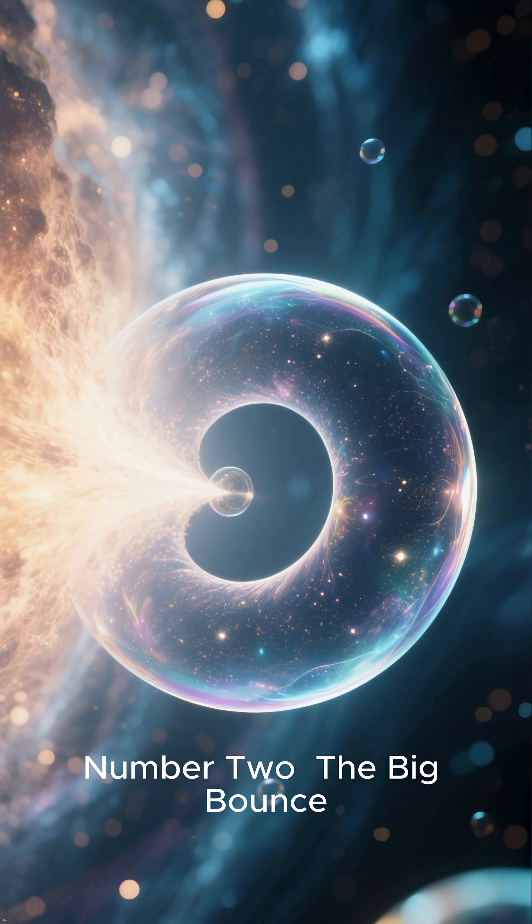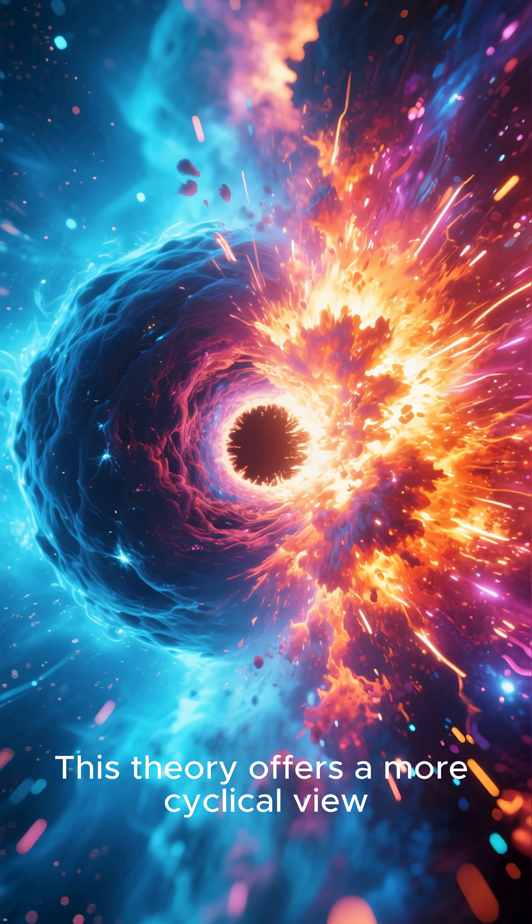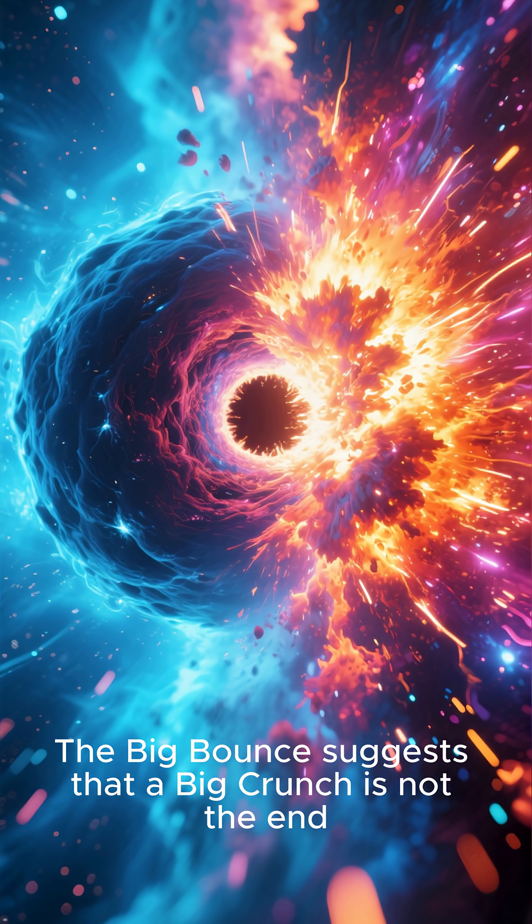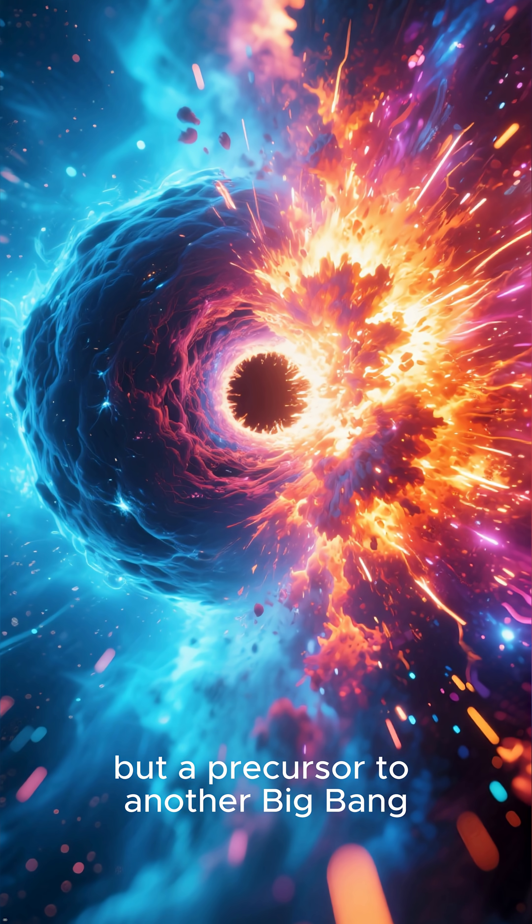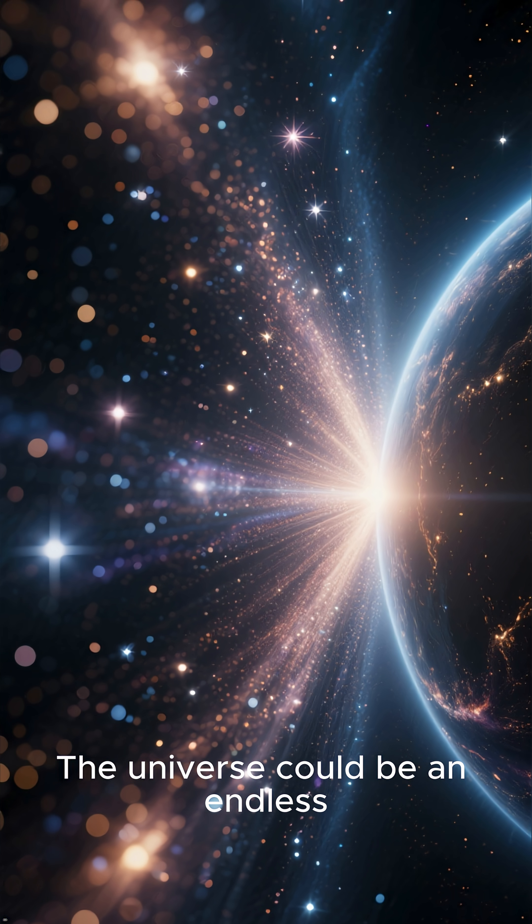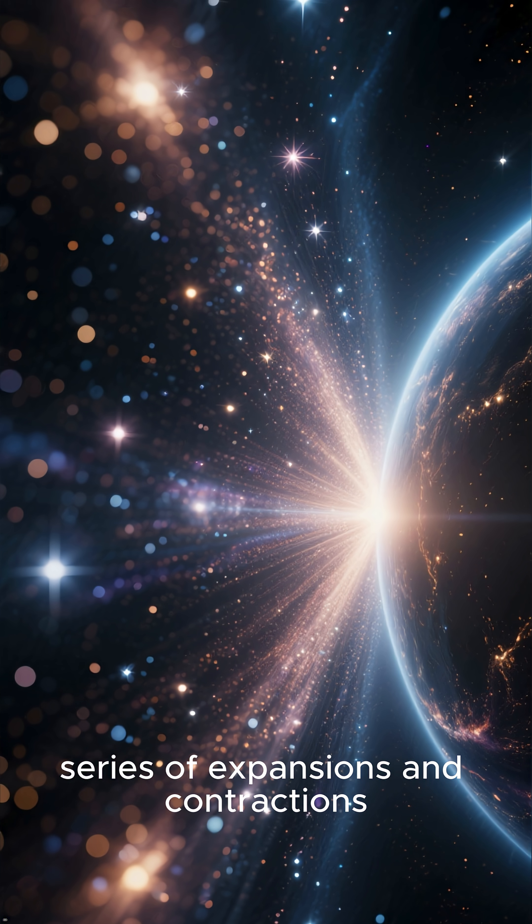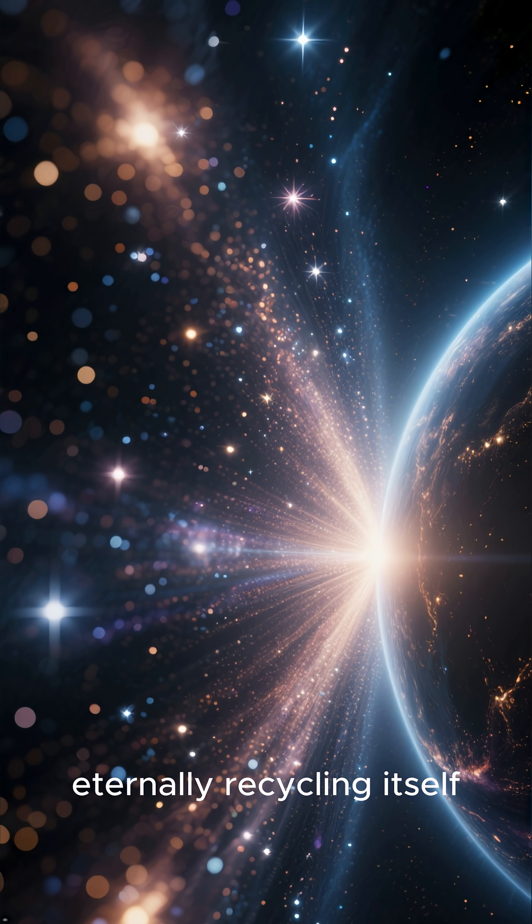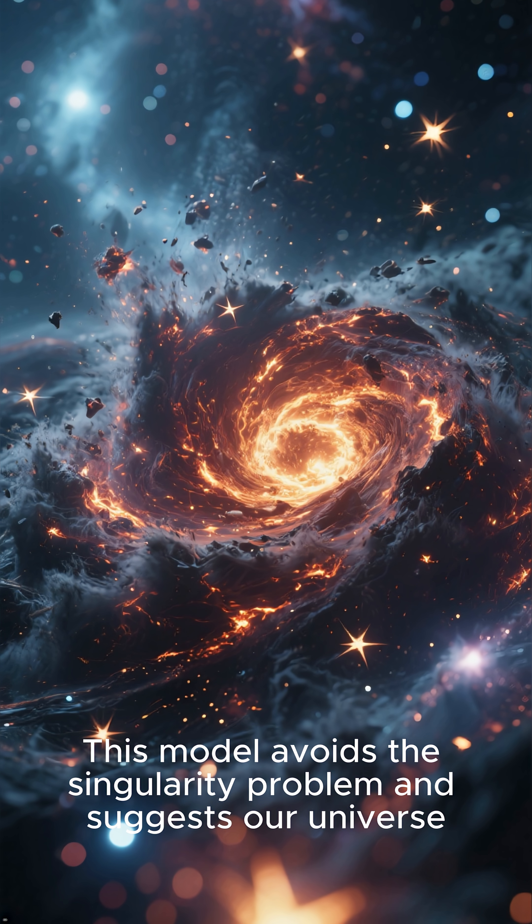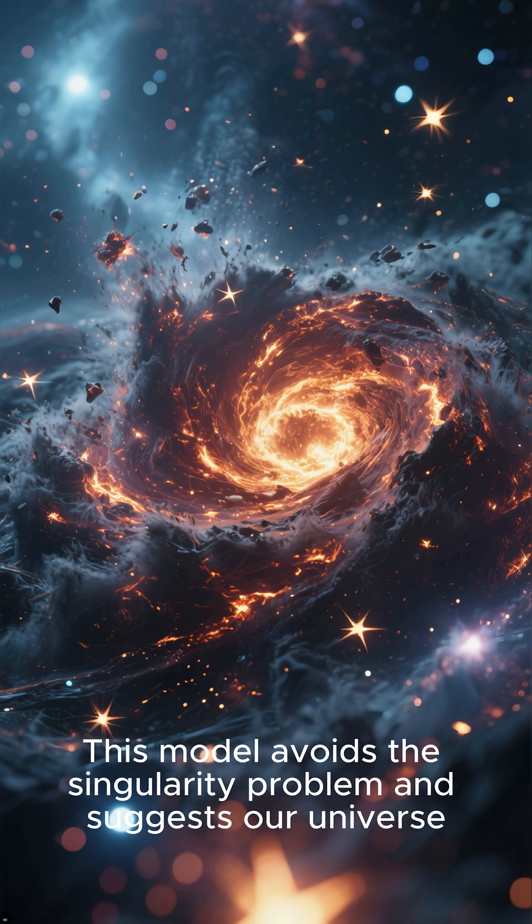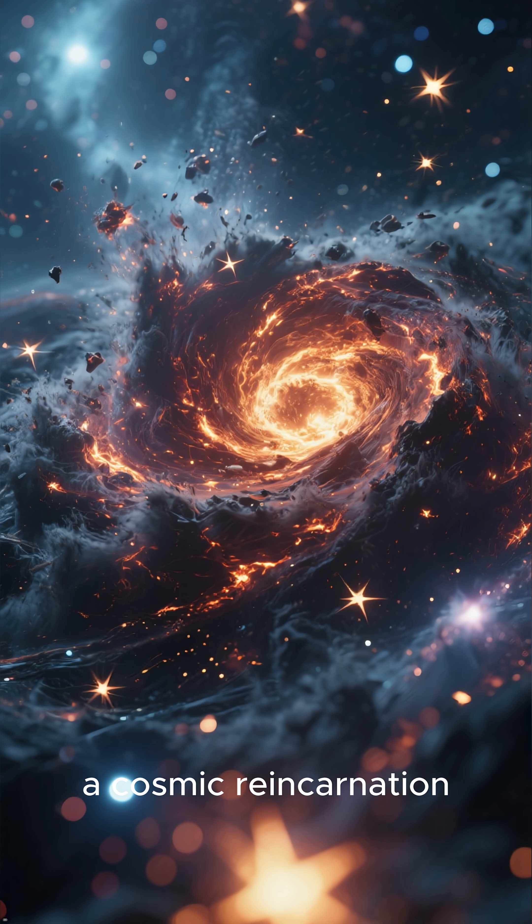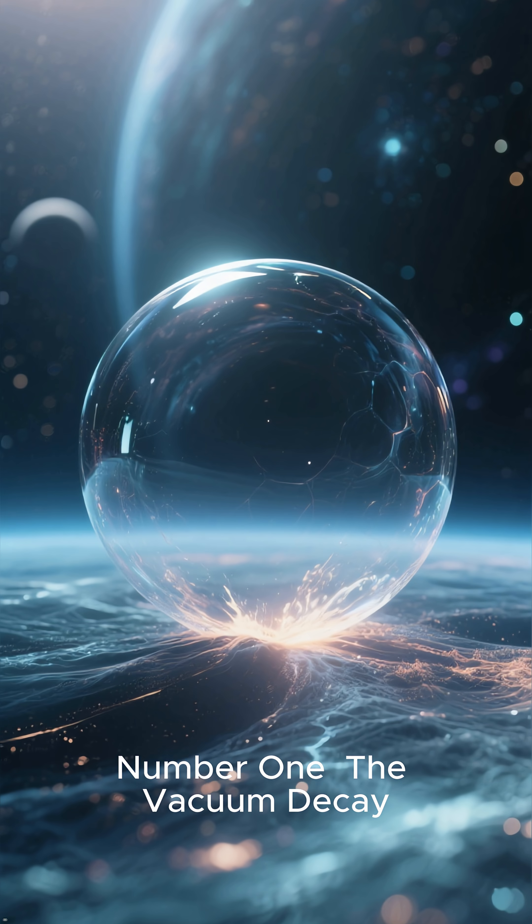Number 2: The Big Bounce. This theory offers a more cyclical view. The Big Bounce suggests that a big crunch is not the end, but a precursor to another Big Bang. The universe could be an endless series of expansions and contractions, eternally recycling itself. This model avoids the singularity problem and suggests our universe might have been born from the death of another—a cosmic reincarnation.